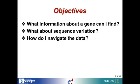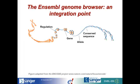So what information about a gene can I find? The genome browser is trying to be an integration point. There are over a hundred databases of biological information out there, and what we're trying to do is provide a quick and easy way to go to a specific region or a specific gene and find out more information. For example, you can view splice variants, proteins, and the non-coding RNAs in a region.